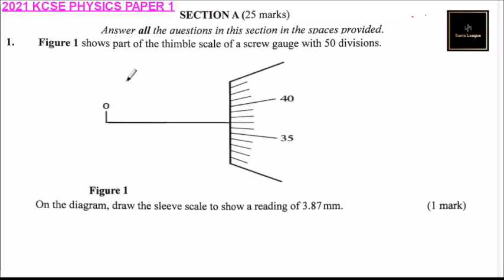This is 2021 KCSE Physics Paper 1 that was done in 2022 March. Section A: 25 marks. Answer all the questions in this section in the spaces provided.